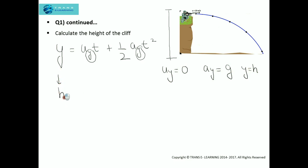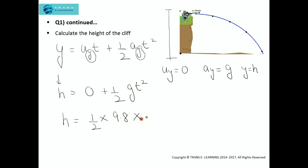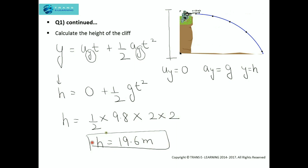Substituting the values: h = 0 + ½·g·t². So h = ½ × 9.8 × 2² = ½ × 9.8 × 4, which gives us 19.6 meters. So the height of the cliff is 19.6 meters.